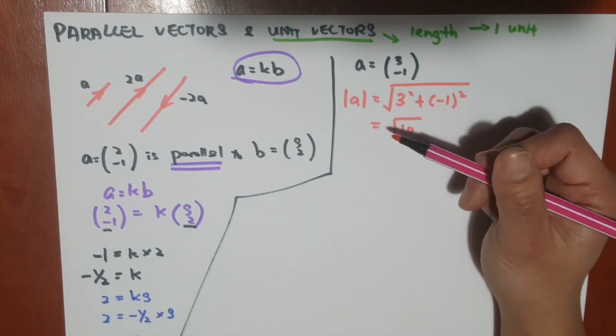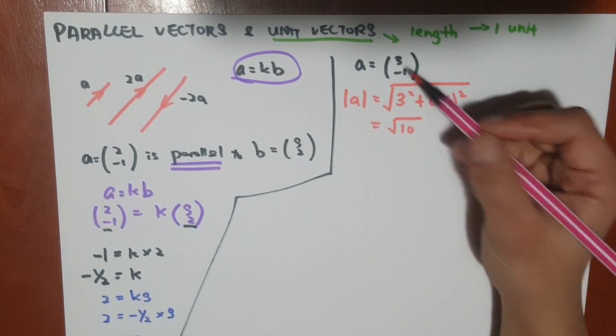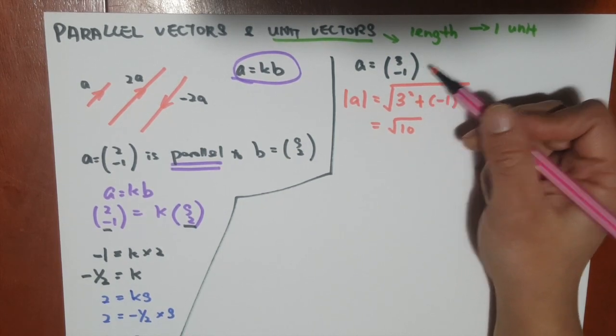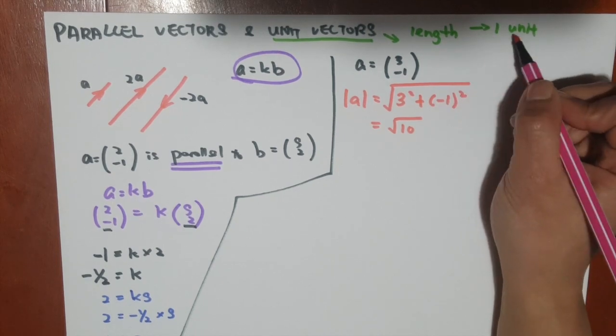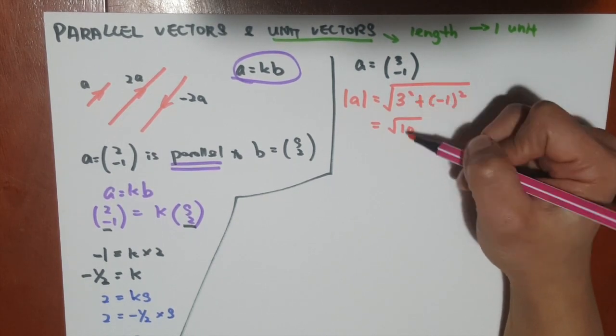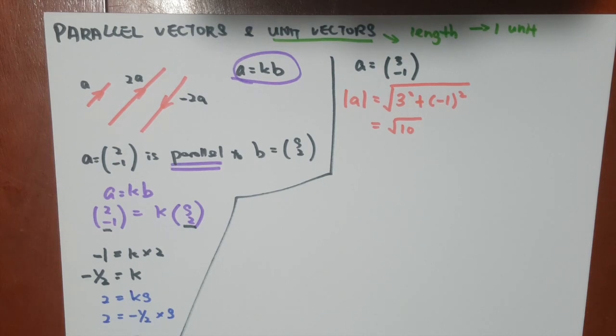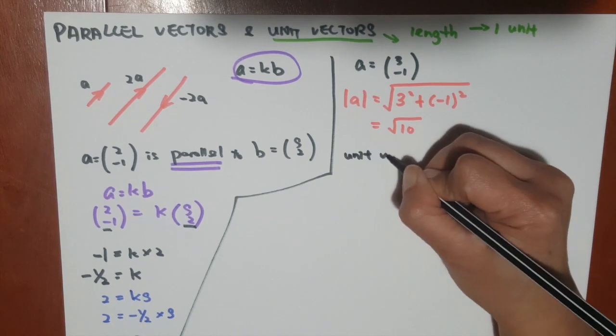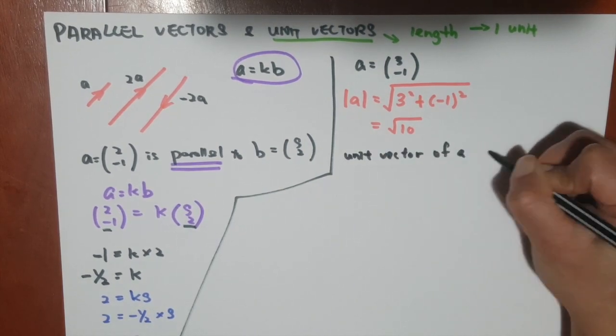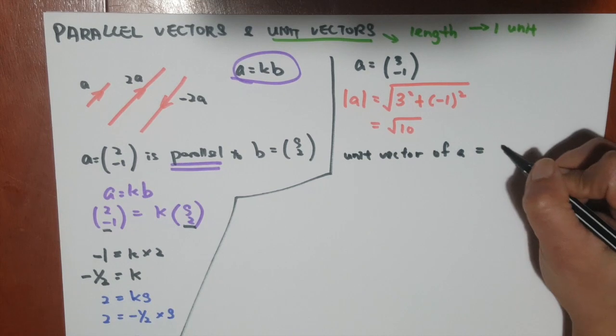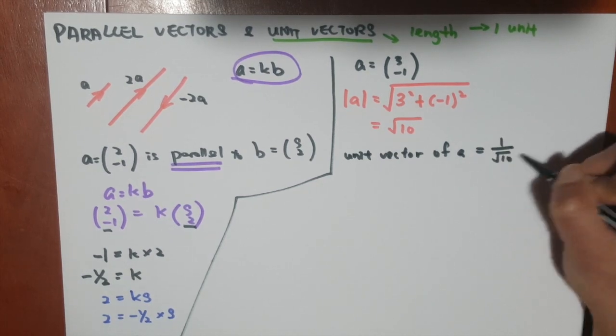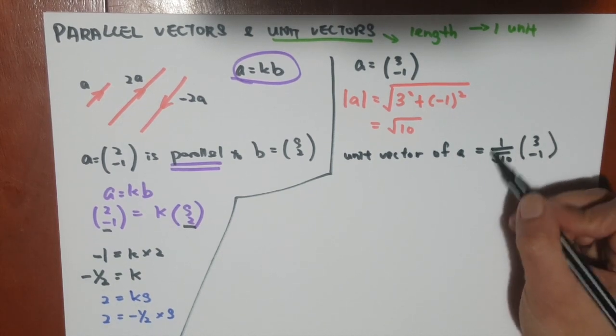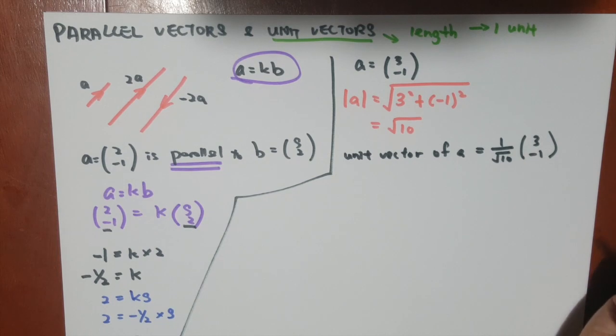So this is the length of the vector. But however, because we want the length to be 1 unit, we have to divide this vector by square root 10. So the unit vector of a will be 1 over square root 10 times (3, -1). I can put it this way, because this means that this vector will divide by square root 10.